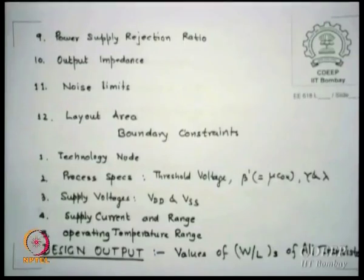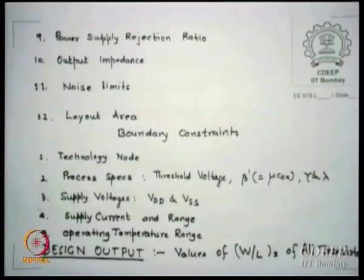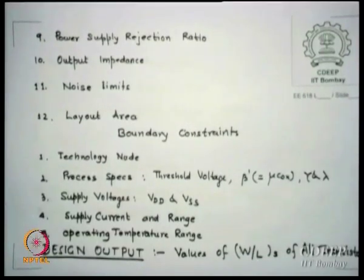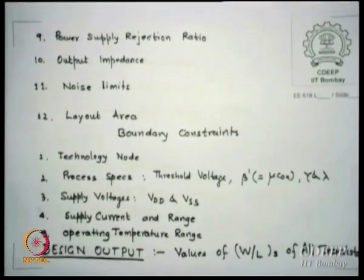The area is fixed by the technology node. Some area is specified for you and you have to fit everything into it. The output area is sometimes the limiting constraint.